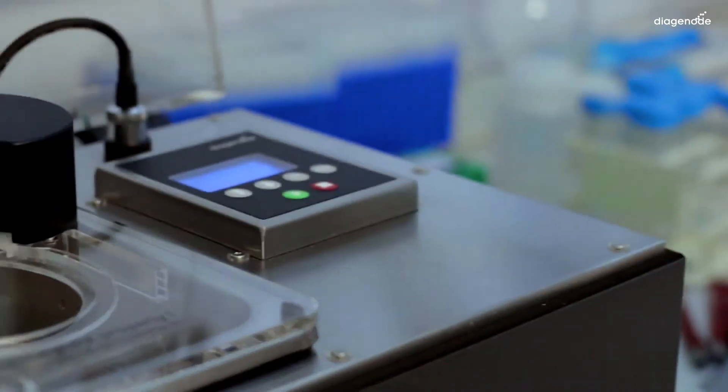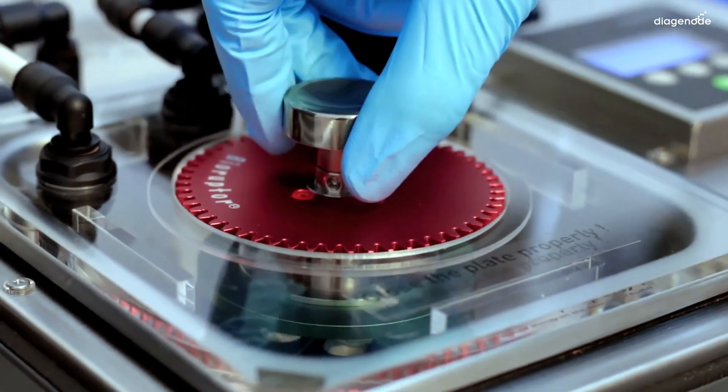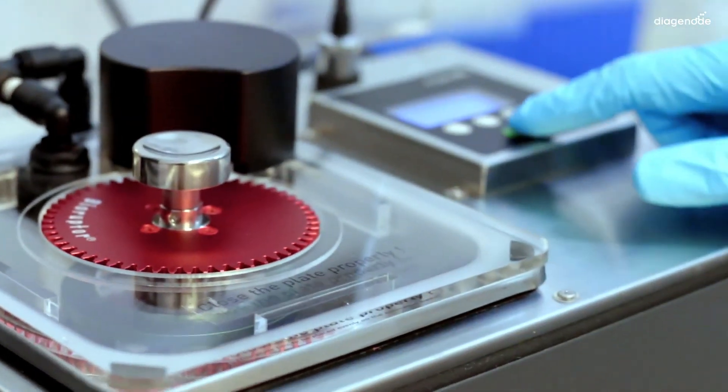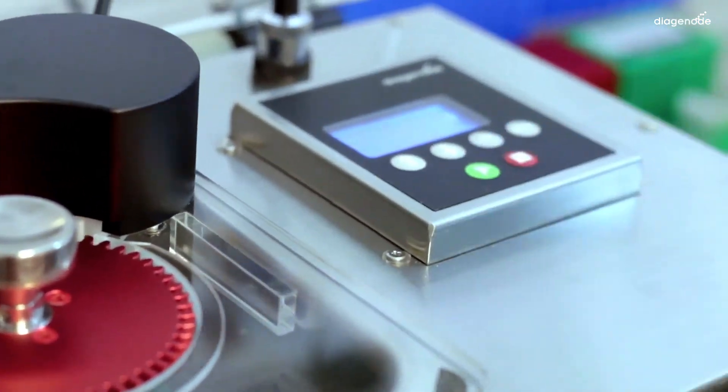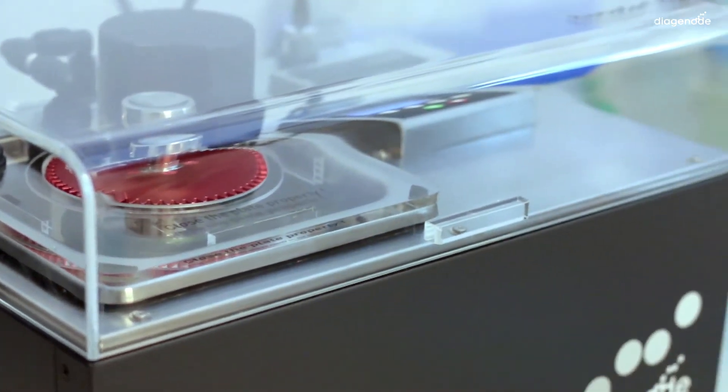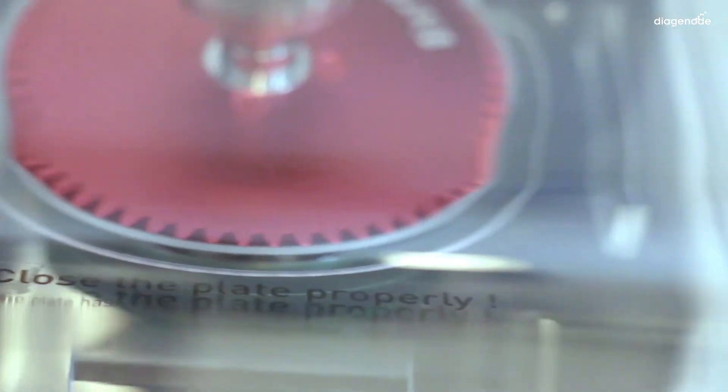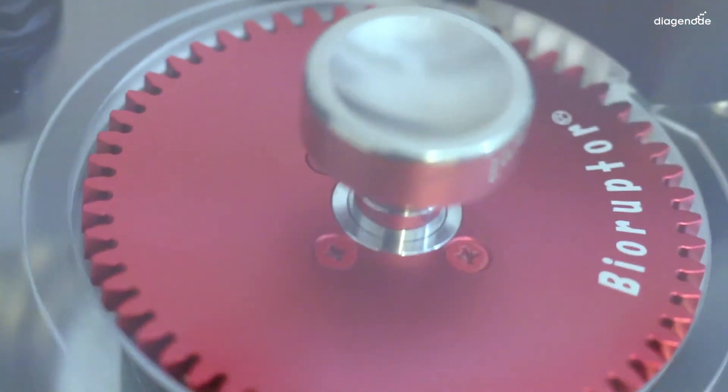Just put a tube holder full of tubes into the sonication bath. Push the start button and close the lid. If you hear the sound, it means everything is OK.